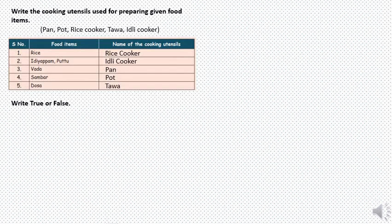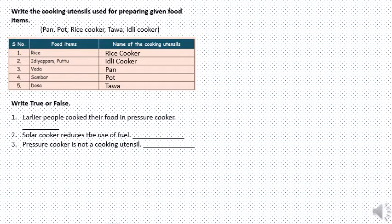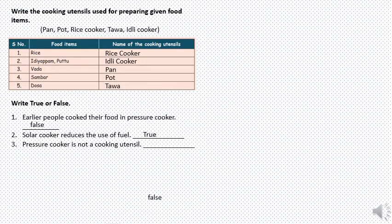Write true or false. Earlier people cooked their food in a pressure cooker — False. Solar cooker reduces the use of fuel — True. Pressure cooker is not a cooking utensil — False.